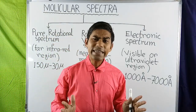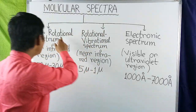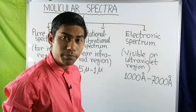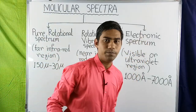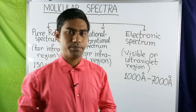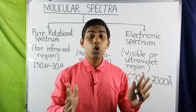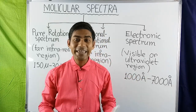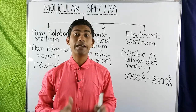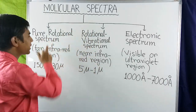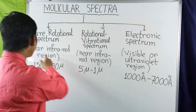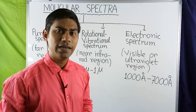Molecular spectrum may be divided into three classes: first is pure rotational spectrum, second is rotational-vibrational spectrum, and third is electronic spectrum. The transition between rotational energy states of a molecule with the emission or absorption of a photon gives rise to the pure rotational spectrum, which lies in the far infrared region.